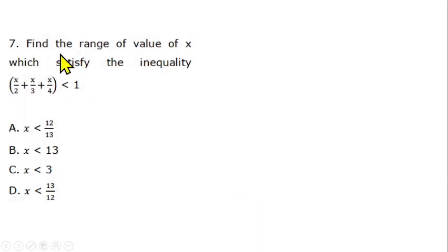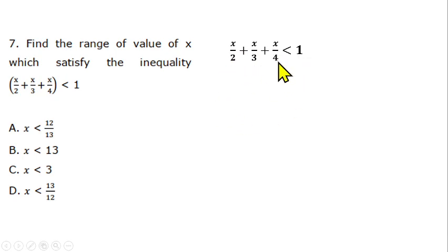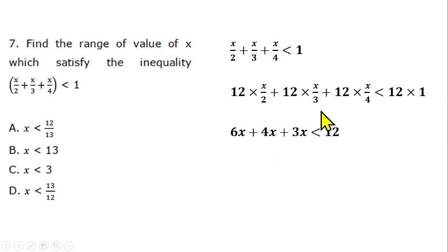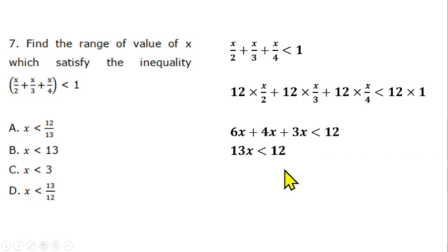Question 7 is from inequalities. Find the range of values satisfying x/2 plus x/3 plus x/4 < 1. Multiply through by LCM = 12: 6x plus 4x plus 3x < 12, giving 13x < 12. Therefore x < 12/13, which is option A.